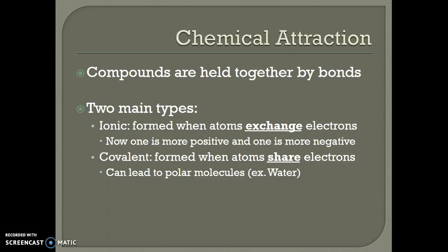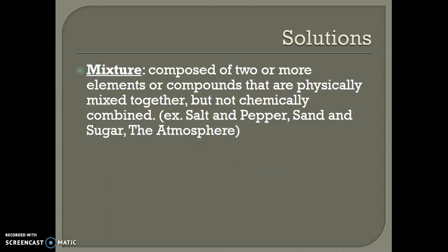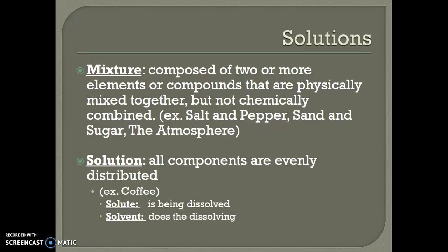Next step up, we have a mixture. A mixture is when you combine two or more elements or compounds. Now when we make a mixture, you're physically mixing them together, so they're side by side, mixed in, but they're not chemically combined, so they're not bonded together. For example, you can make a mixture of salt and pepper. It's still just salt and pepper and you can separate out salt and pepper, but they are mixed together. Same thing with sand and sugar. You can mix it together, but it's still sand and sugar and you can separate them if you want to.